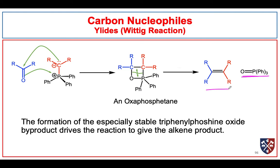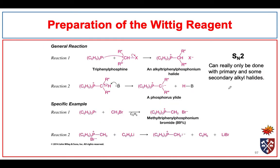Let's think about how we make our phosphorus ylids. We typically use a trialkylphosphine, very often triphenylphosphine. It's quite nucleophilic and it can react with an alkyl halide. We can really only do this reaction with primary and secondary alkyl halides. The secondary alkyl halides will undergo elimination if there are any protons on the carbons next to them, so it's not very often that we see that.